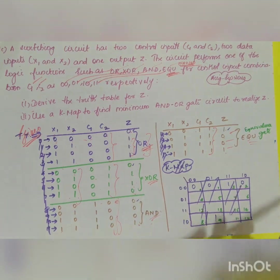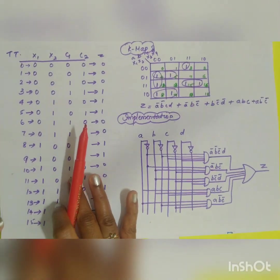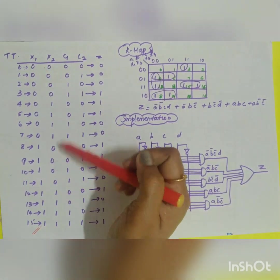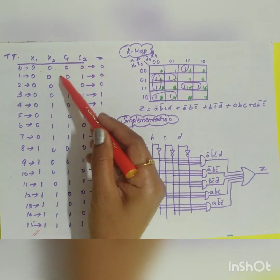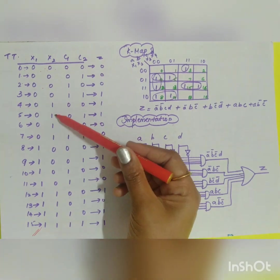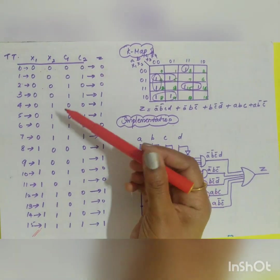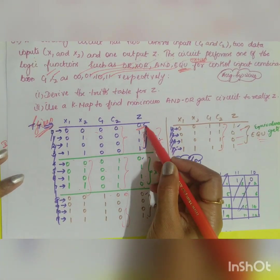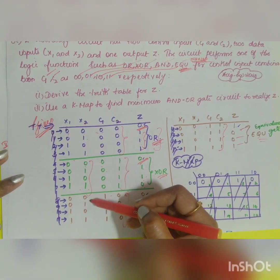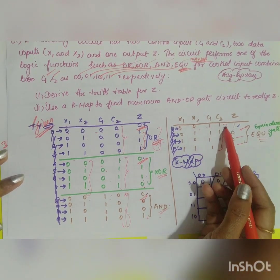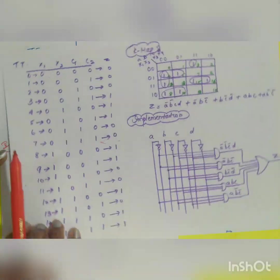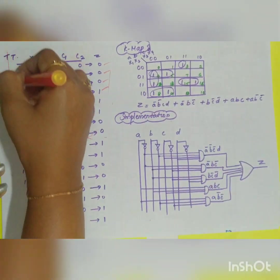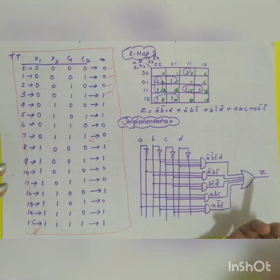Write the decimal equivalents 0 through 15 in order, covering all combinations of c1, c2, x1, x2. For example, 0000 gives output 0, 0001 gives 0, 0010 gives 0, 0011 gives 1, and so on. Just look up the corresponding gate output for each combination and fill in the z column. This completes your truth table.